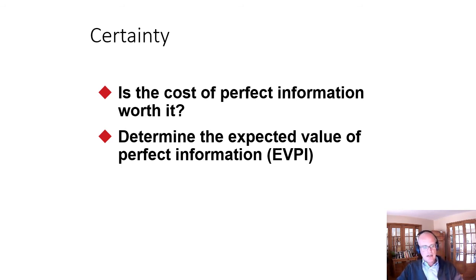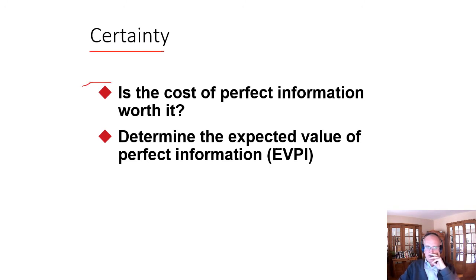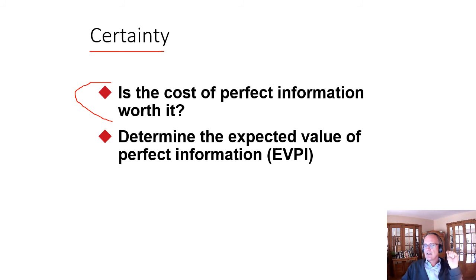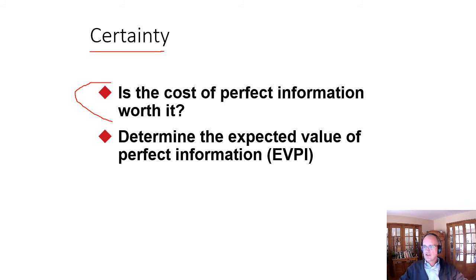The last point I want to make here is: what if we could do some research or market research and have a sense of what the outcome is going to be? What if we could remove the uncertainty and essentially give us certainty? If there was a cost associated with that, is the cost of perfect information worth it? In order to answer that, we need to determine the expected value of perfect information. We've incorporated uncertainty by weighting outcomes by probabilities; now we can determine the expected value of perfect information and look at the difference between the two.